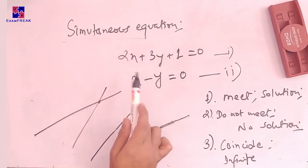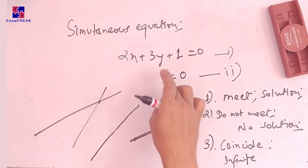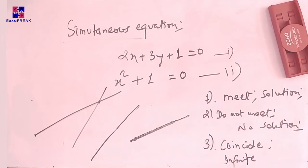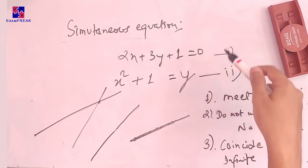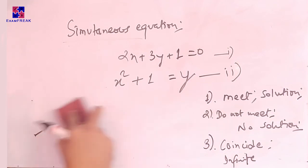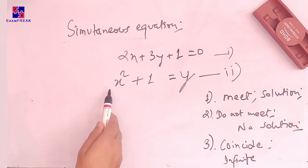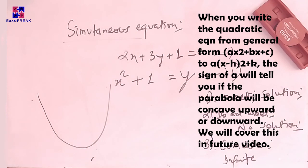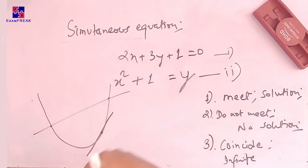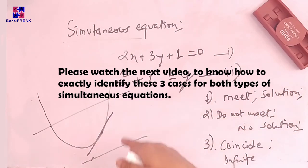This covers simultaneous equations where both equations are linear. But it is also possible that one equation is quadratic — for example, y = x² + 1 paired with a linear equation. Since the coefficient of x² is positive, this parabola is concave upward. There are again three possibilities: the line meets the curve at two points; the line meets the curve at exactly one point, in which case it is tangent to the curve; or the line never meets the curve at all, such as when the line lies entirely below the curve.